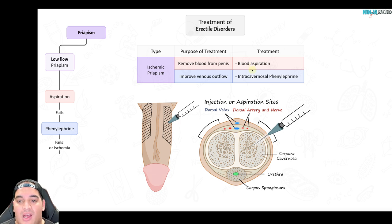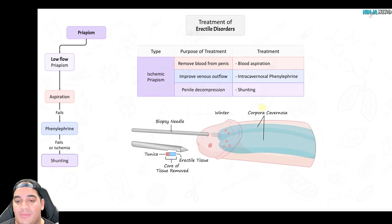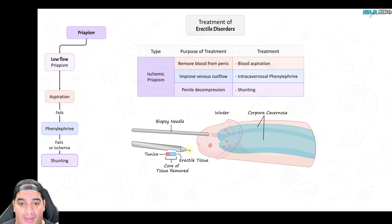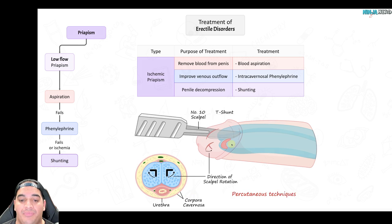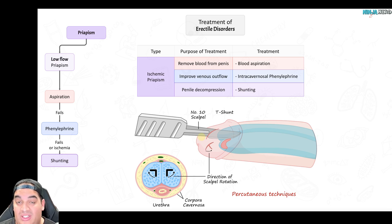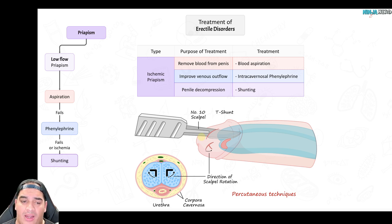In severe cases where patients don't respond and start developing penile ischemia, surgical shunting into the intracavernosal area is required. Techniques include inserting a biopsy needle to create holes allowing blood to drain, a scalpel punch through the glans penis into the corpus cavernosum, or a T-shunt — directing the scalpel through the glans penis into the corpus cavernosum, then redirecting horizontally to allow blood to drain outward. These shunting techniques decompress the corpus cavernosum, decongesting it and eliminating the erection.